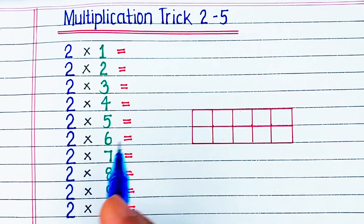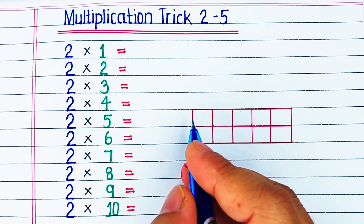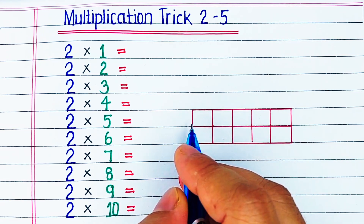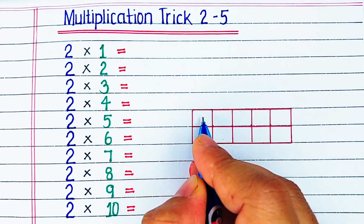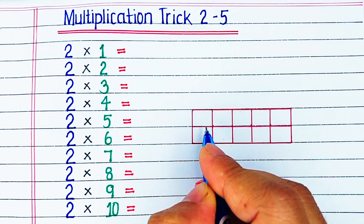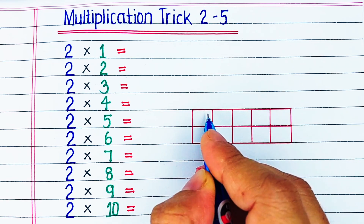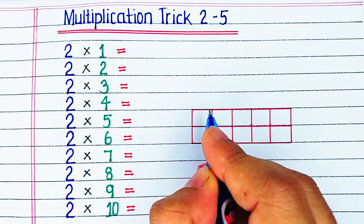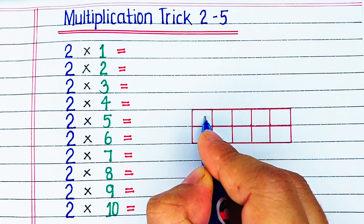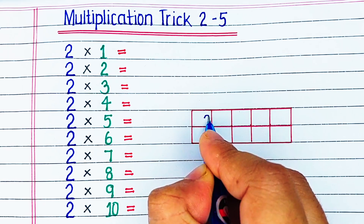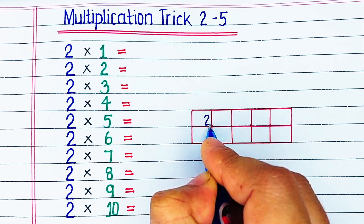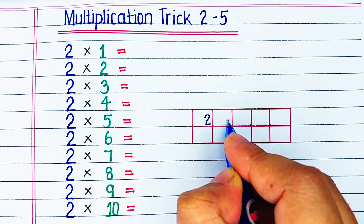Trick for 2 times table. First, we will start with drawing out a 5 by 2 grid. Here, we have 5 columns and 2 rows. In the first row, we will write the 2 times of the serial of column.